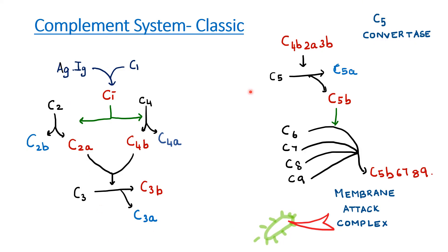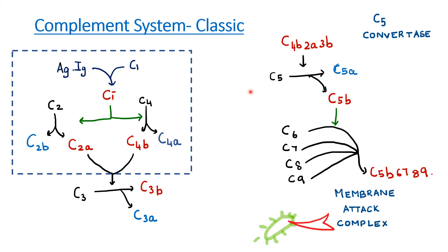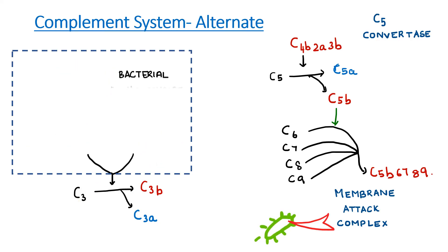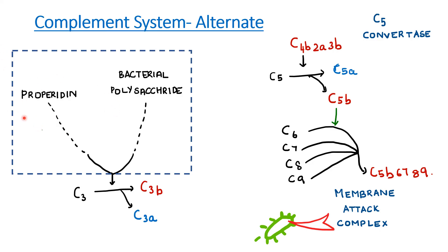In the alternative pathway, the initial steps involving C1, C4, and C2 are bypassed. Instead, a circulating protein called properdin, when it combines with bacterial polysaccharide, directly converts C3 to C3B, after which the pathway proceeds as in the classical route.